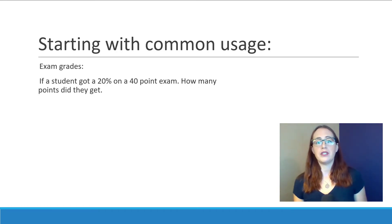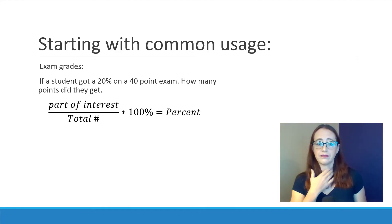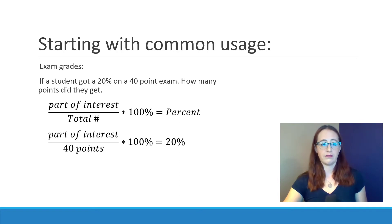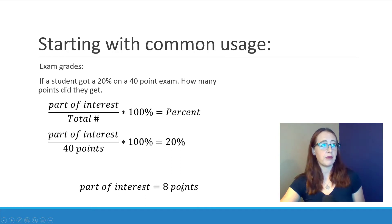Let's do another example using percent of exam scores. Here we're going to use the same concept, but we're going to solve in reverse. We already know the percent, and we know the total points, so we can fill those into our equation. We have our part of interest over our 40-point exam. We can then multiply our 40 points on both sides, divide by 100 percent on both sides, and get our part of interest being 8 points. So we divided our 100 percent, we multiplied our 40 points, and that gives us our part of interest equals 8 points.